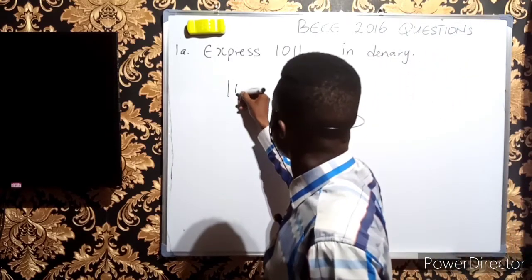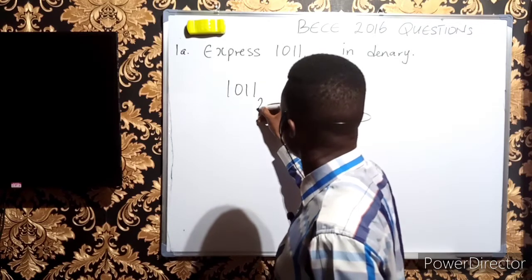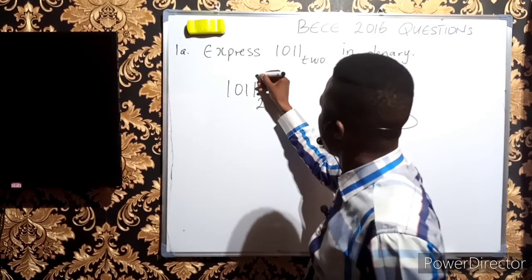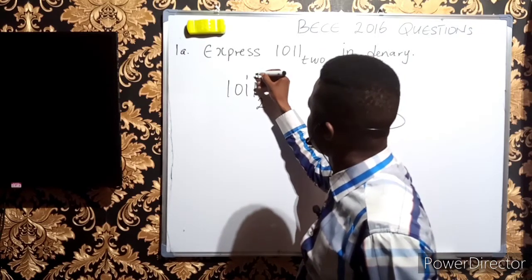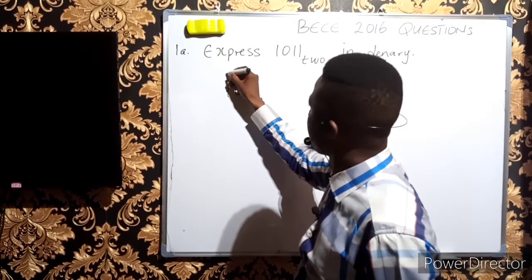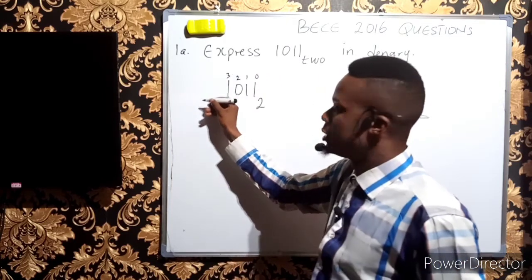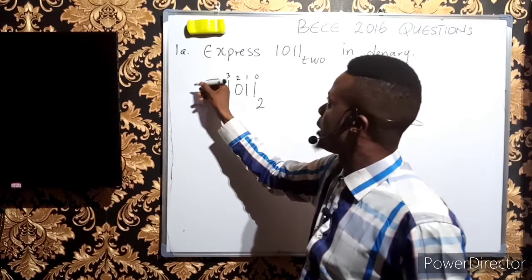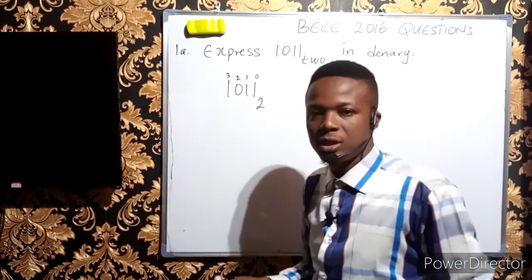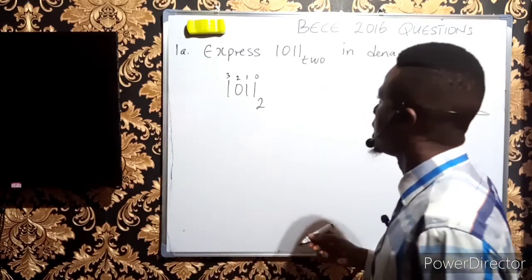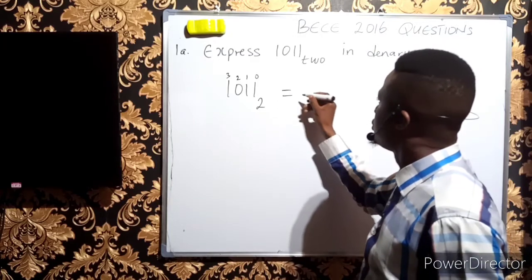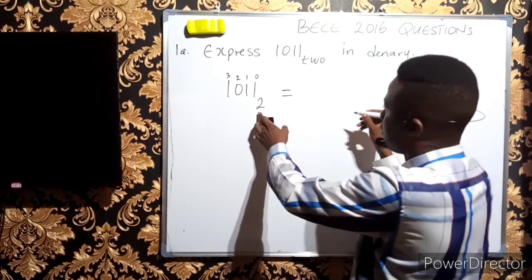Look at the procedure: you have 1011 base 2. The first number gets a power of 0, then 1, 2, and 3, and so on if the number continues. This is equivalent to expressing it in powers of base 2.